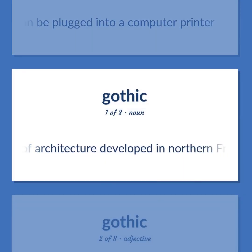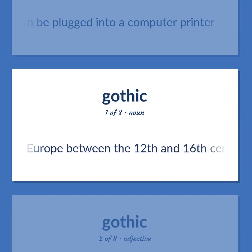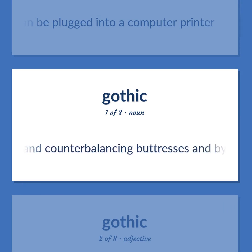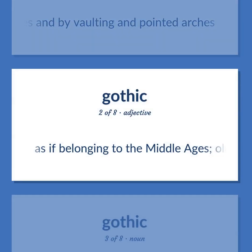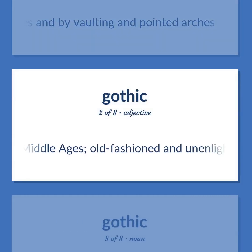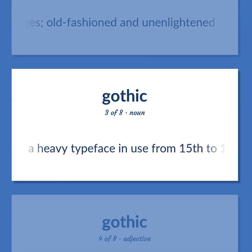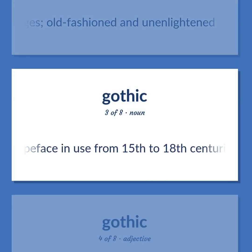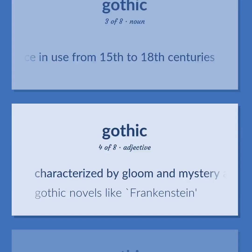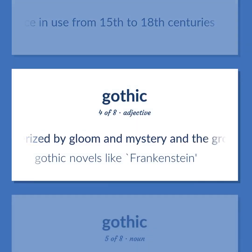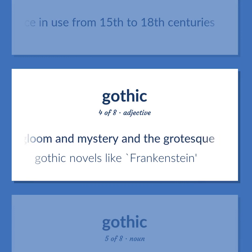A style of architecture developed in northern France that spread throughout Europe between the 12th and 16th centuries, characterized by slender vertical piers and counterbalancing buttresses and by vaulting and pointed arches — as if belonging to the Middle Ages, old-fashioned and unenlightened. Characterized by gloom and mystery and the grotesque — gothic novels like Frankenstein.